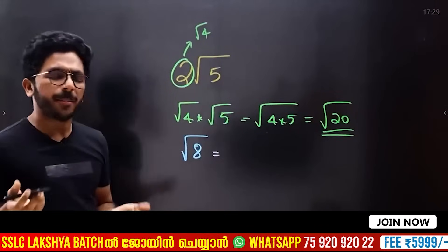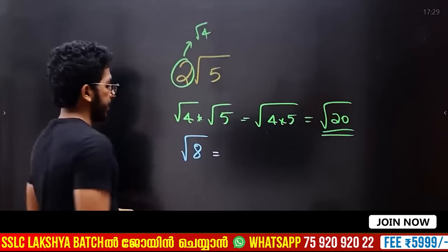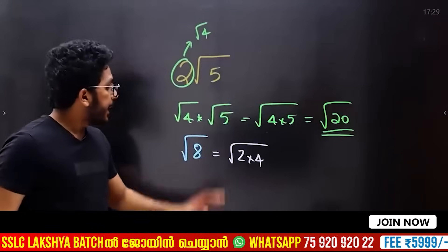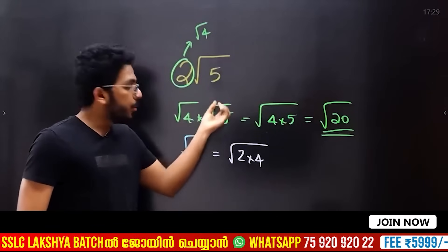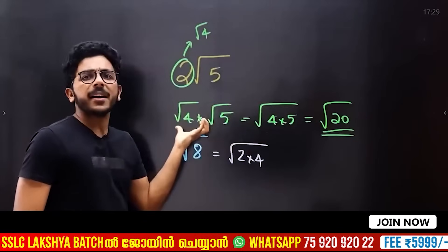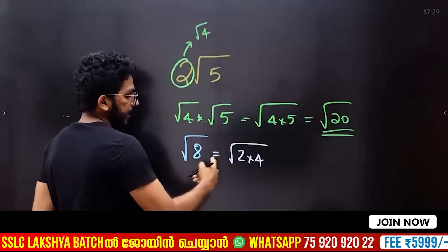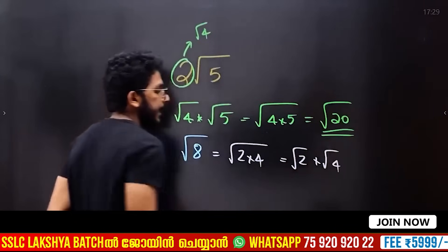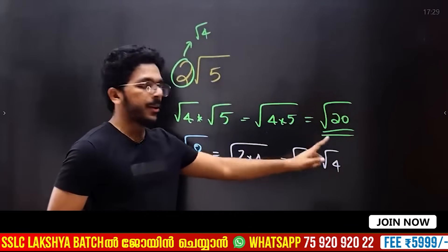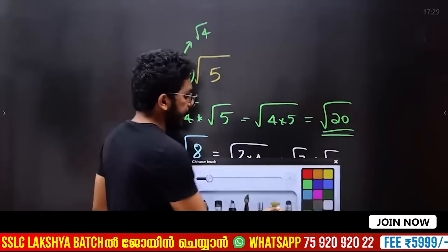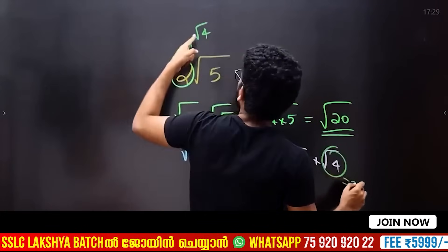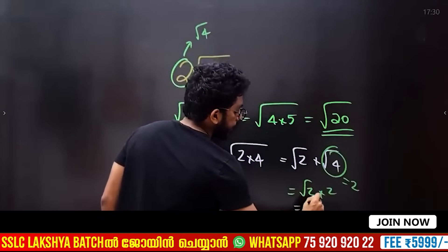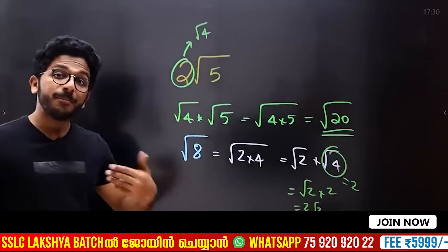Let's see the multiplication of root 80. That's 1 into 80, or 2 into 40, or 4 into 20 — that is root 4 into root 20. We separate it: root 4 into root 20, then root 4 into root 4 into root 5. Root 4 is 2, so root 80 simplifies to 2 root 20, or further to 4 root 5.